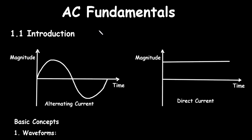Introduction to AC fundamentals. Alternating current AC is a type of electrical current in which the direction of the flow of electrons switches back and forth at regular intervals or cycles. This is in contrast to direct current DC, where the flow of electrons is in a single direction. AC is the form of electrical power most commonly delivered to businesses and residences.